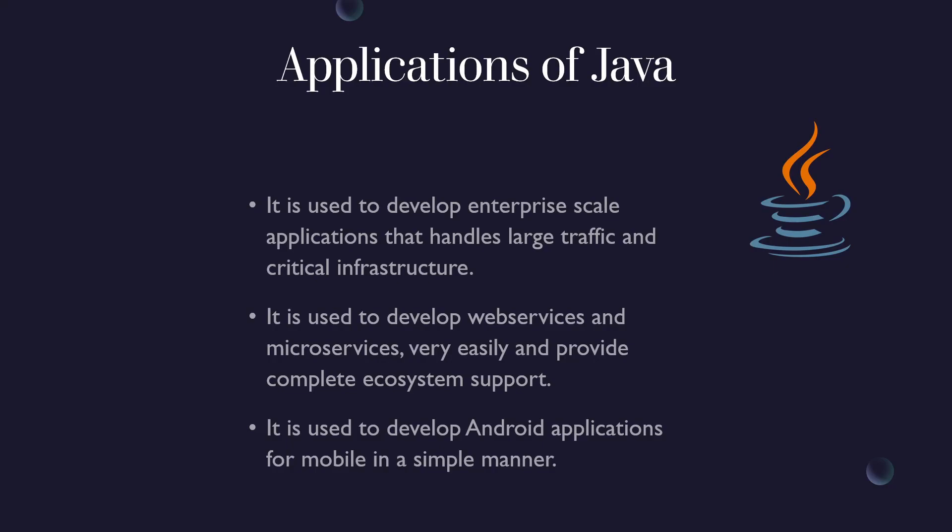Now let's understand some applications of Java, so we can see why we should learn it and how it can be useful for your future. First, Java is used to develop enterprise-scale applications that handle large traffic and critical infrastructure. Big companies like Netflix, Google, Oracle, JP Morgan, and Goldman Sachs all use Java in their backend for handling critical infrastructure and large traffic to their web services. No language currently competes with Java in this respect — Java is the leader in this segment.